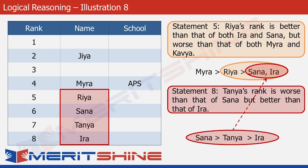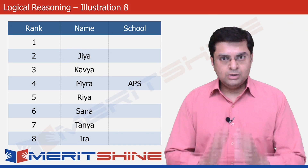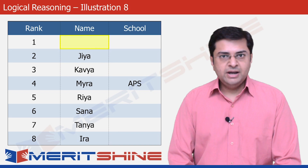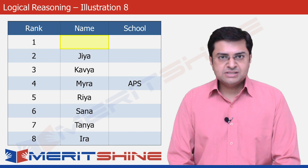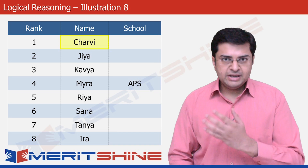Now let's look at statement 2. It says Gia's rank is better than that of Kavya. It's obvious that Gia and Kavya would be fitted into the two remaining boxes — ranks 1 and 2 are taken, so Gia is placed at rank 1 and Kavya at rank 3. The only cell left in the names column now corresponds to the only student not yet placed: Charvi. So we put Charvi's name in that cell.